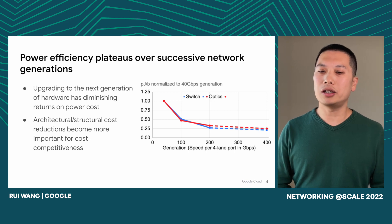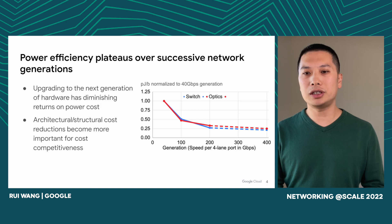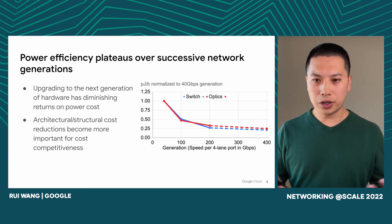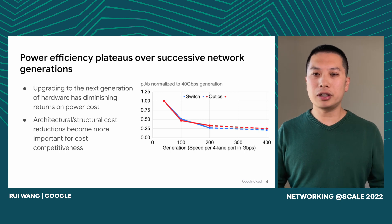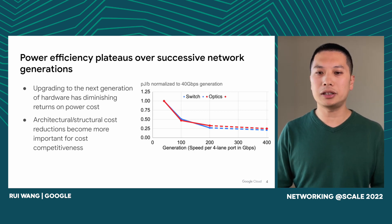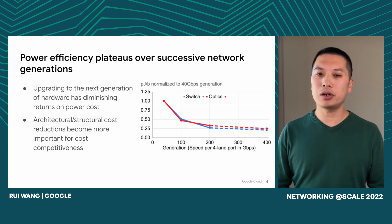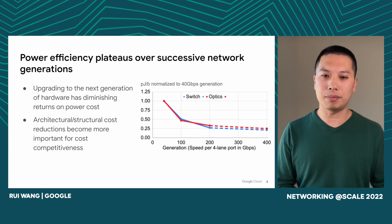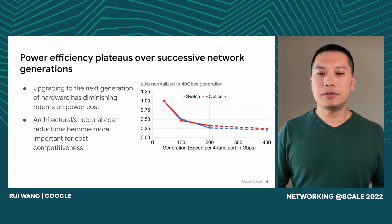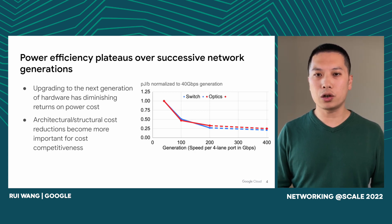Another emerging challenge was that we had grown accustomed to cost-efficiency improvements over successive network generations. We came to expect that as we upgrade the network to newer generation speed, our cost and power consumption per BPS would drop substantially. However, the signs are that this trend is either decelerating or had completely stopped, similar to Moore's Law. So we believed that we had to find architectural innovations to bend our scaling curve.